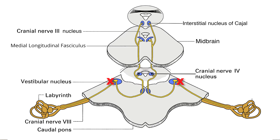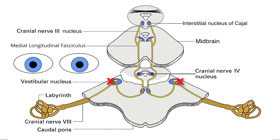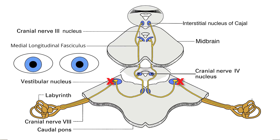If a different part of the vestibular nuclei on both sides were lesioned, the eyes might drift downward and generate a restorative fast upbeat nystagmus, as seen here.